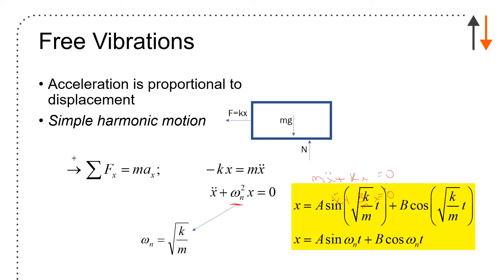Omega_n equals the square root of k over m, and my solution is going to have the form A sin(√(k/m)t) plus B cos(√(k/m)t). I can use another form of this expression which is x equals C sin(omega_n t plus phi).